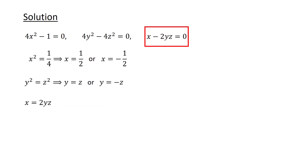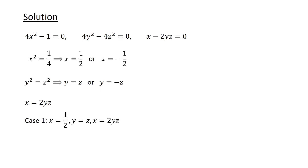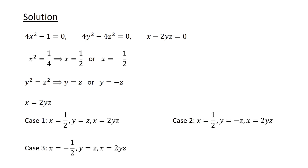We now have 4 cases to consider. Case 1: x equals half, y equals z, and x equals 2yz. Case 2: x equals half, y equals minus z, and x equals 2yz. Case 3: x equals minus half, y equals z, and x equals 2yz. And Case 4: x equals minus half, y equals minus z, and x equals 2yz.